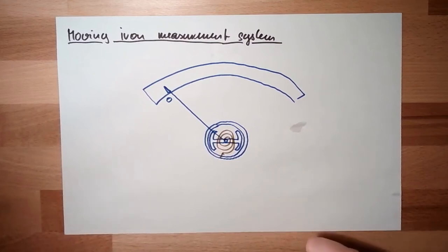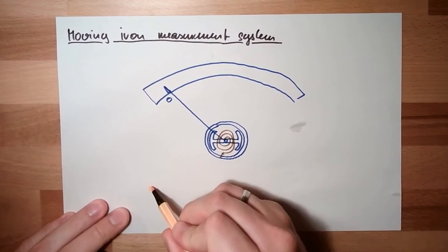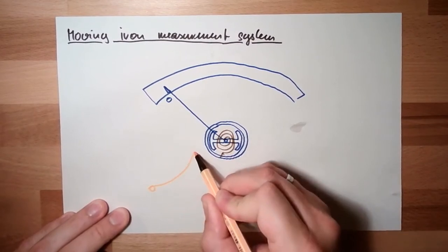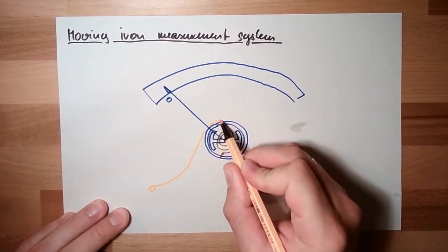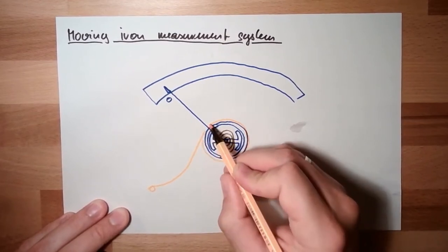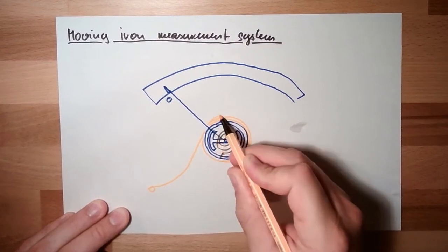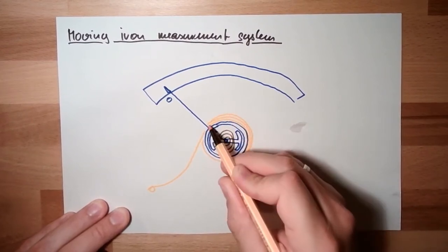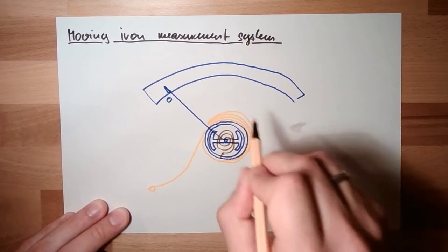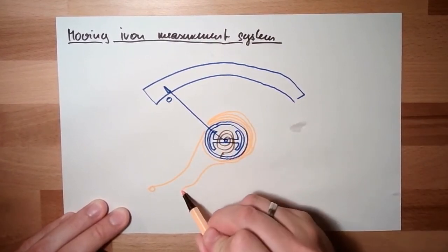Of course, we also need some coil, but this time the coil is not moving. I have a connection here, and I will wind my wires here across this iron which is standstill, and then I will go back.